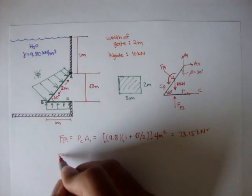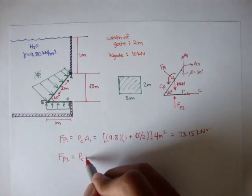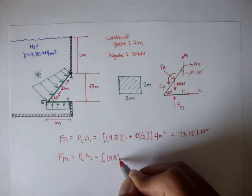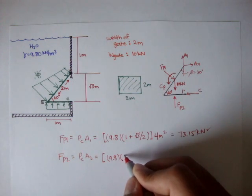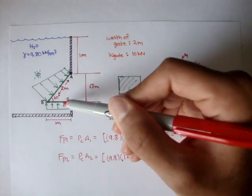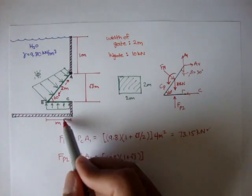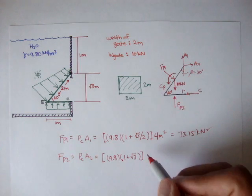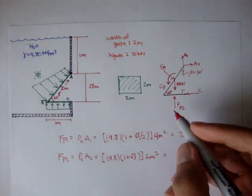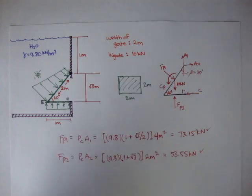Now find fp2. Again, that's pressure at the centroid of this shape times the area at 2, and that's equal to 9.8 kN per meter cubed times 1 plus square root 3, because it's 1 meter plus the square root 3 meters to get to this point. The area, this is 1 meter, and the width is 2 meters, so it's 1 times 2, which is 2 meters squared. And we get about 53.55 kN.